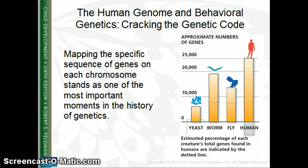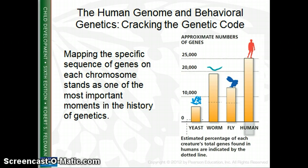Scientists have now mapped the human genome, looking at the number of genes from yeast to worms to flies to humans, and how different we are from other living creatures. They always thought there were about 100,000 genes in humans, but it turns out it's probably closer to 25,000 — not many more than far less complex organisms. Scientists have discovered that 99.9% of the gene sequence is shared by all humans, regardless of skin color or where on earth they're from. We are a lot more similar than we are different.